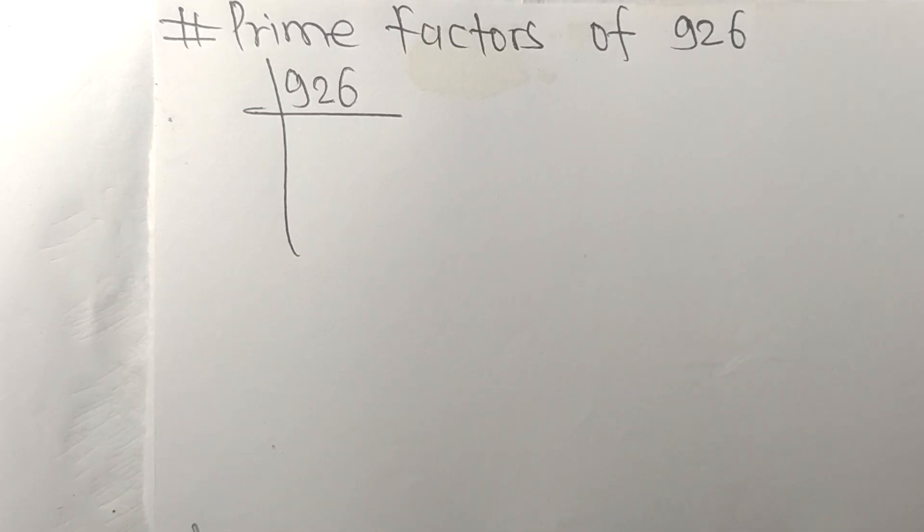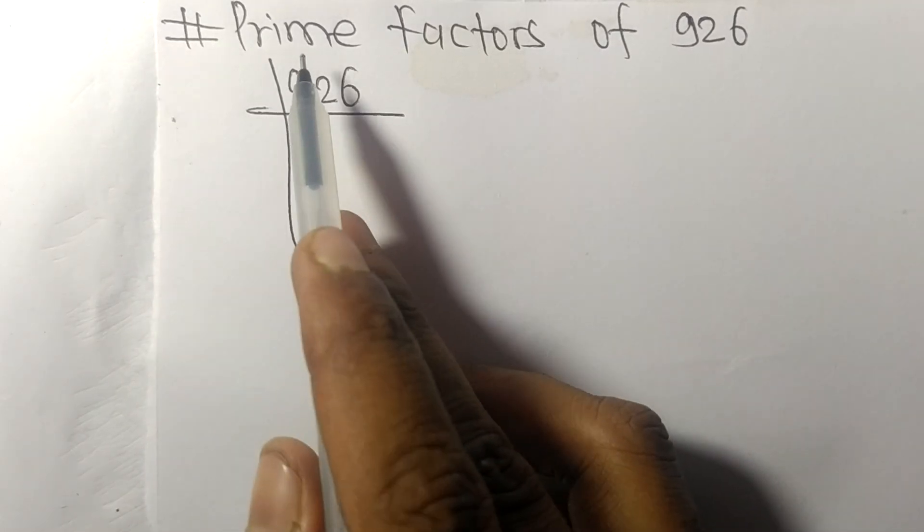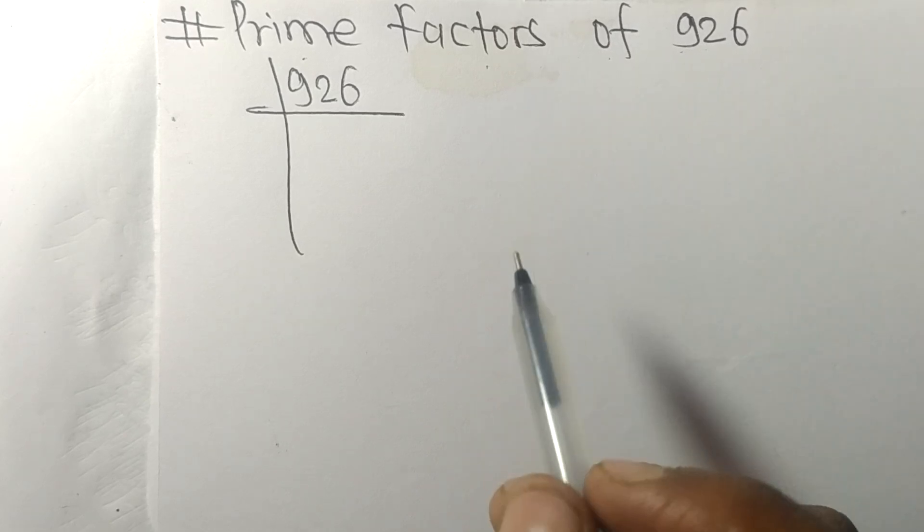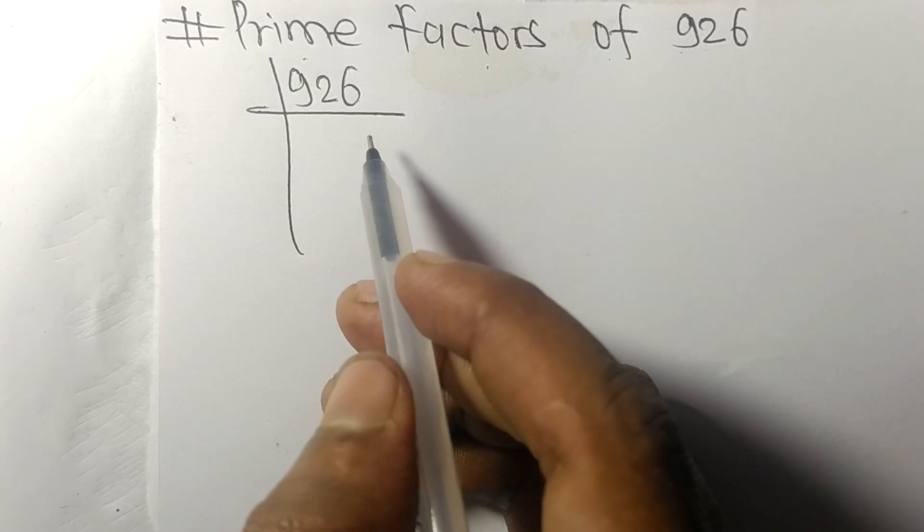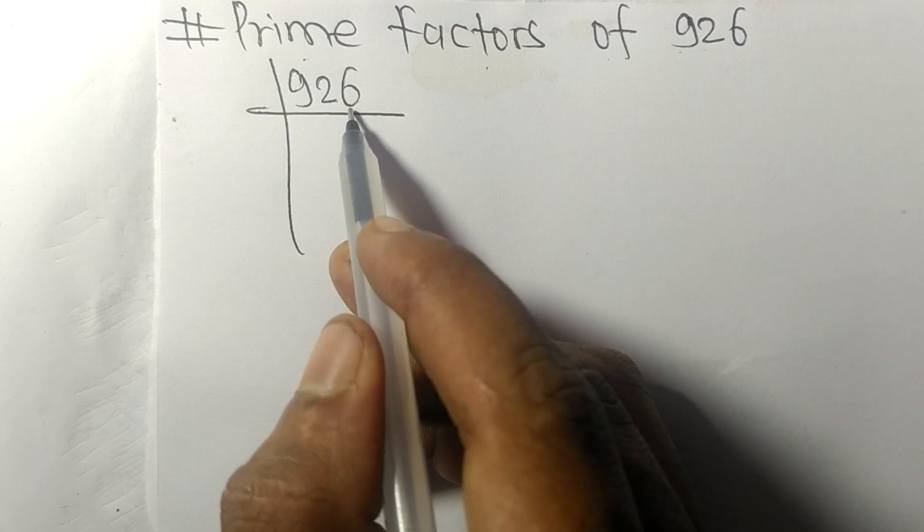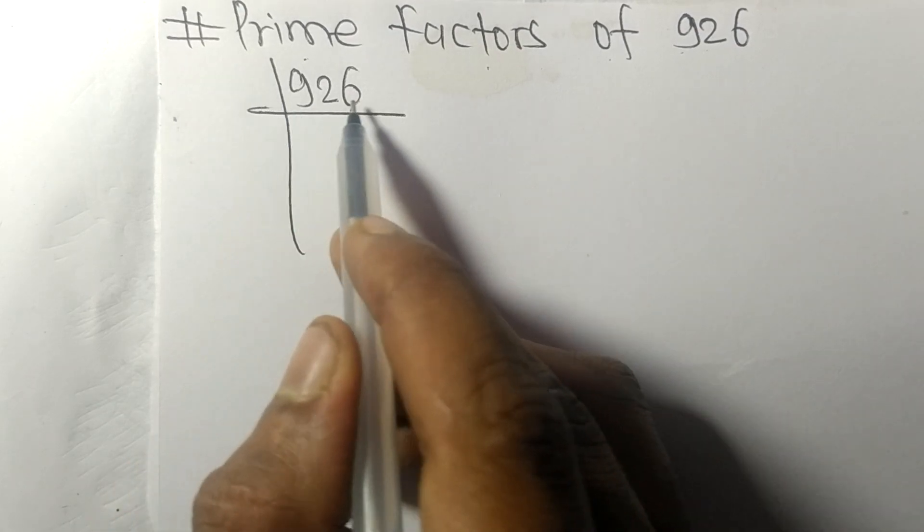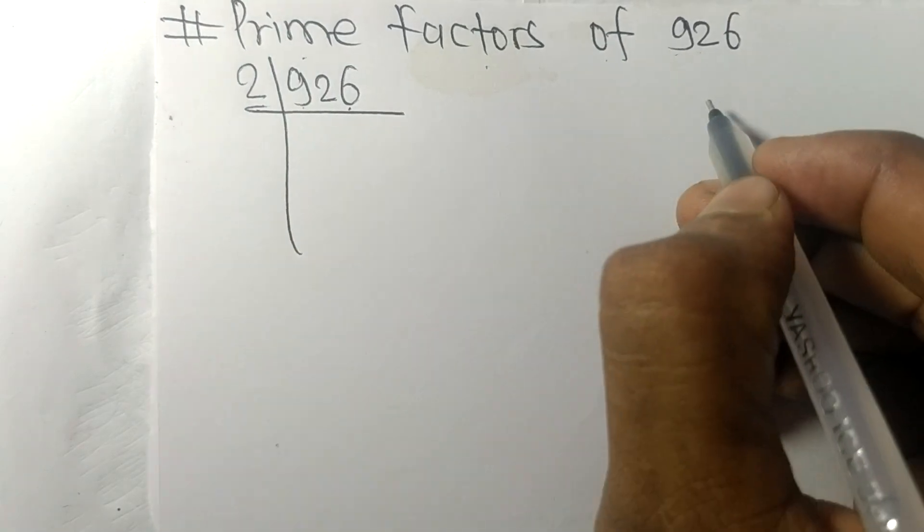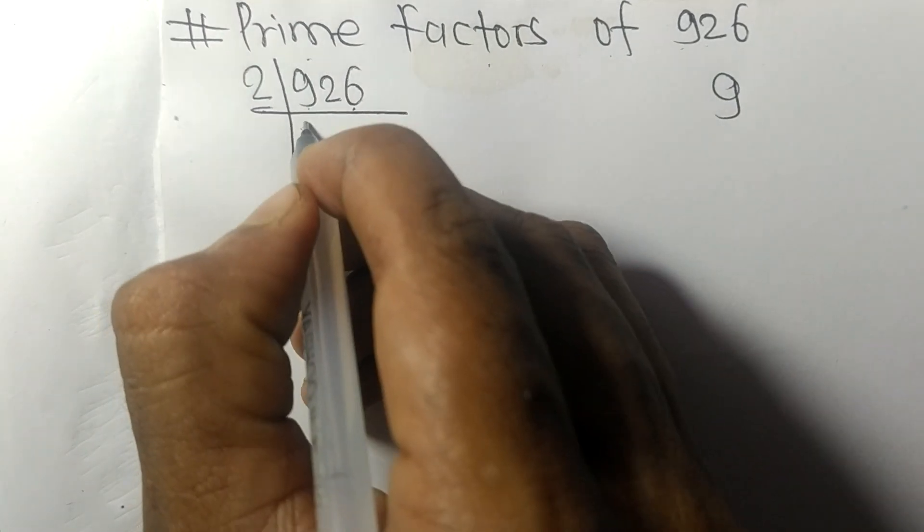Today in this video we shall learn to find the prime factors of 926. It contains an even number 6, so this whole number is divisible by 2. First we have 9, so 2 times 4